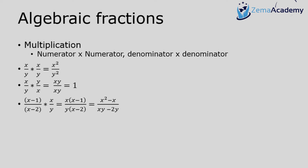A slightly more complicated example: x minus 1 over x minus 2, multiplied by x over y. I multiply the numerators together, putting x outside the bracket to get x(x minus 1) on top, and y(x minus 2) on the bottom. Multiplying out gives x squared minus x on top and xy minus 2y on the bottom.